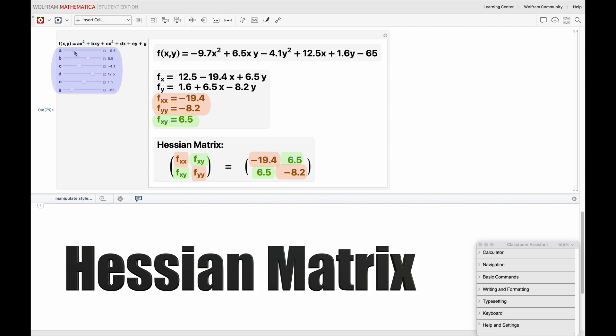Again, we can see how the Hessian matrix changes as we change these sliders in this code that I made.